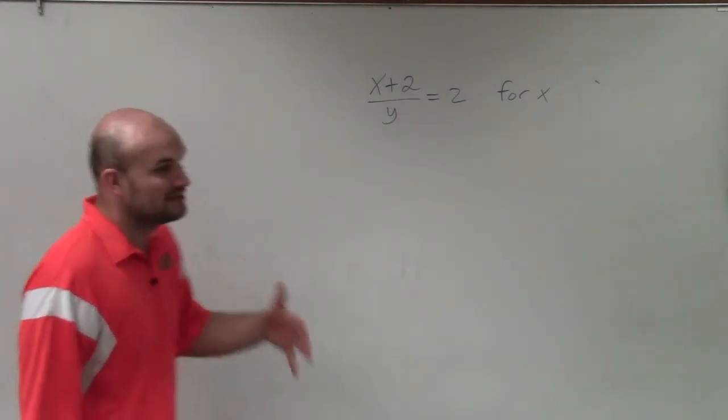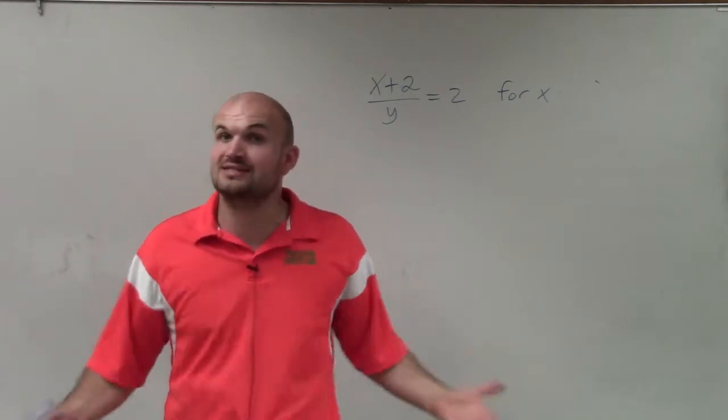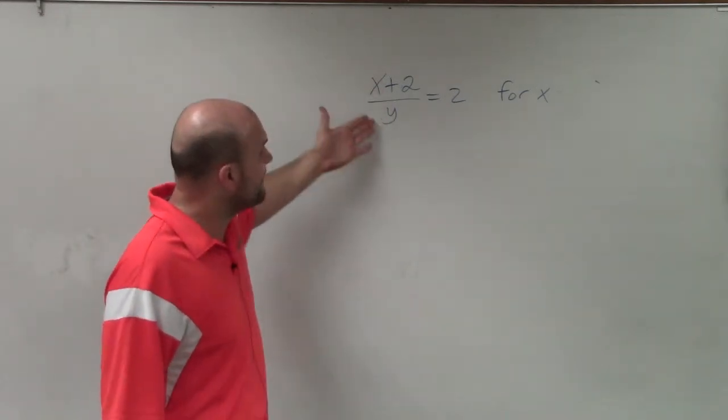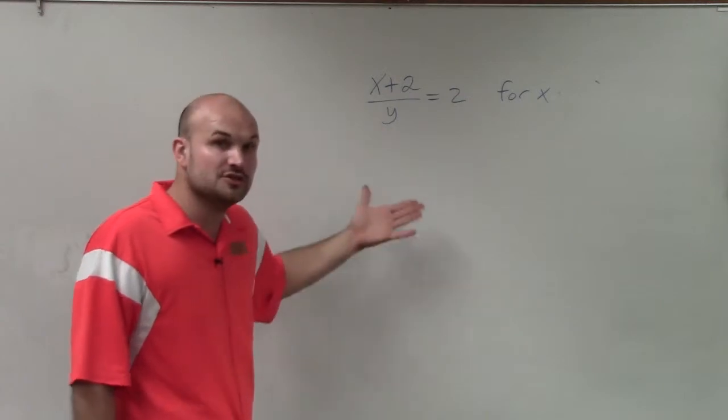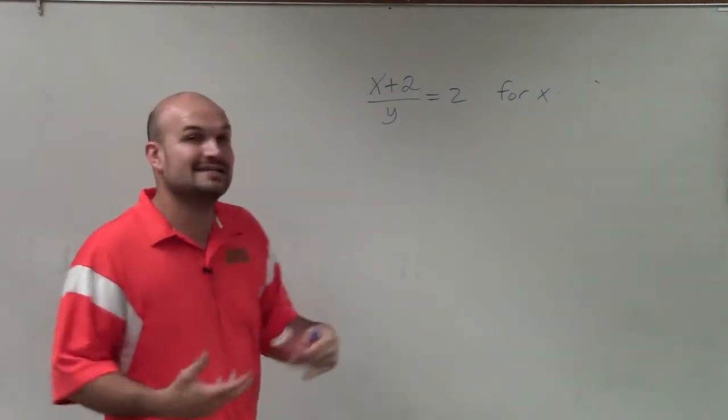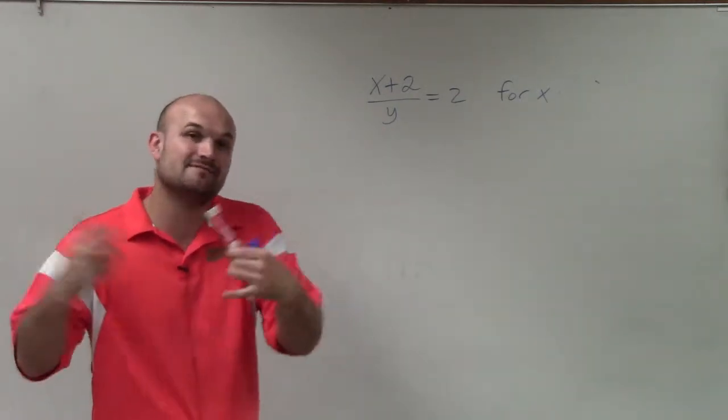So in this case, we need to say, alright, well then stop crying about the fraction. Let's get rid of the fraction. x plus 2 divided by y. So if we want to undo dividing by y, we're going to need to multiply, right? We're using inverse operation.